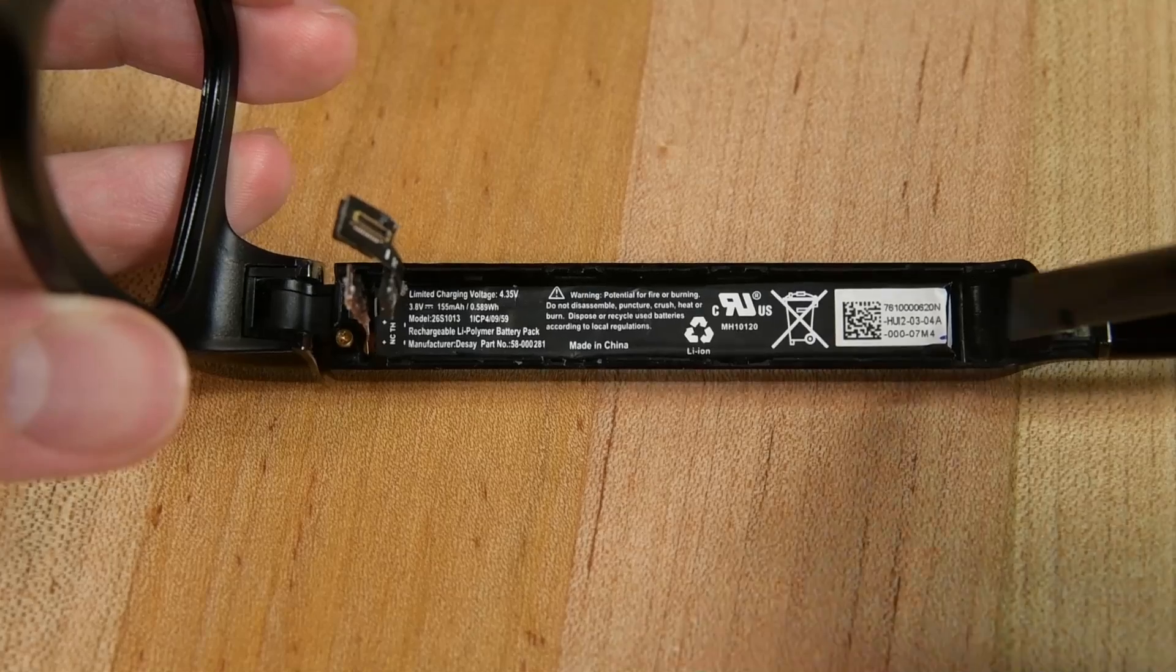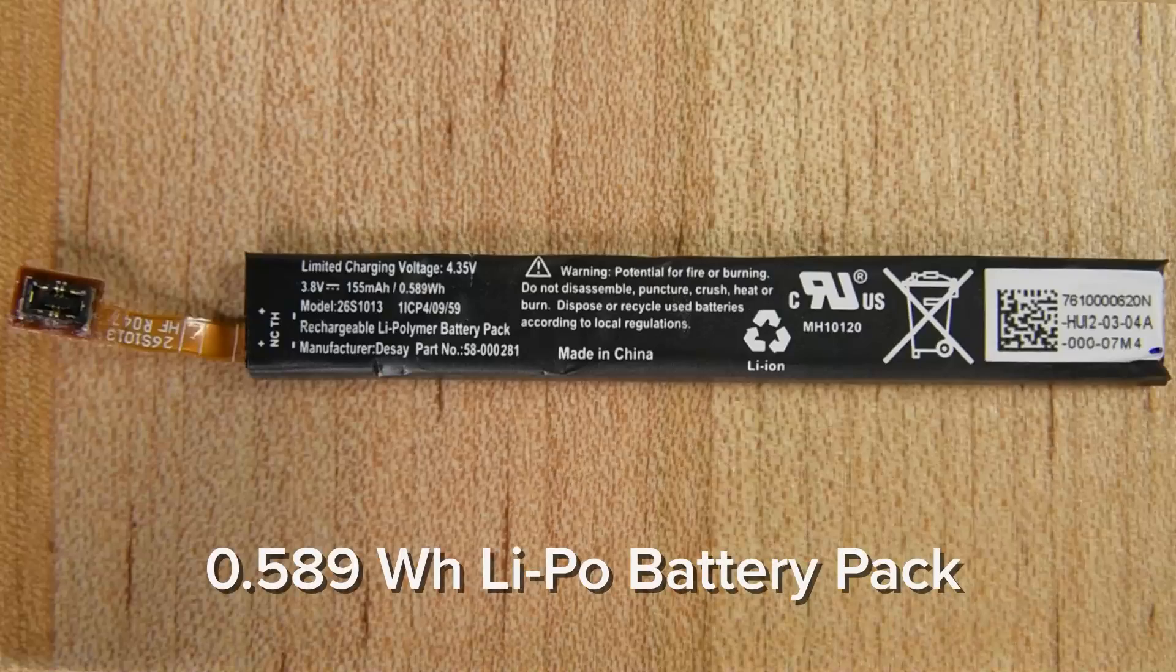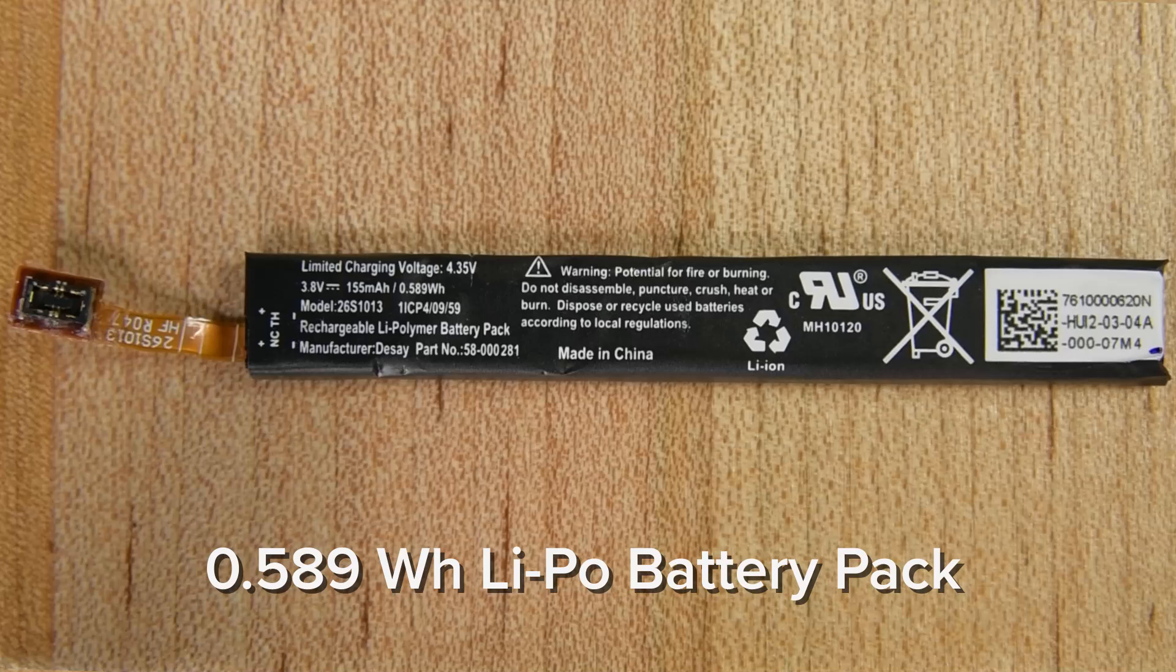Very carefully and then pull it out and there's the battery. It's lightly adhered in place and a lot bigger than I expected. It's a .589Wh LiPo battery cell which is the equivalent of almost two sets of AirPod batteries and much bigger than the .07Wh battery that Jeff found in the Oura Ring that he just tore down.